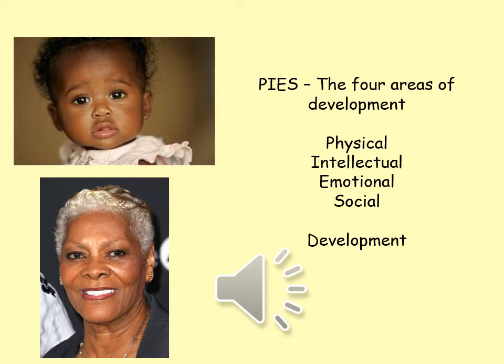Intellectual development is how we learn things. Young children go through an incredible period of learning when they begin to talk, then go to school and develop new knowledge and ideas. Intellectual development affects all age groups and is linked to babies, attachment, and the stresses and strains of life. Finally, social development covers the need to socialise within families and with friends, and the impact this has on us.